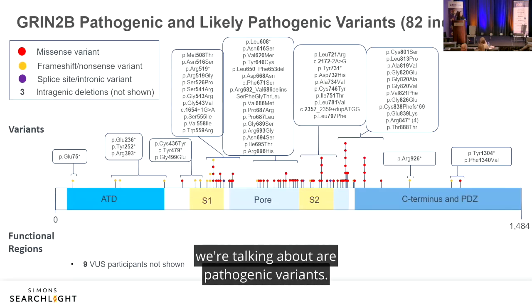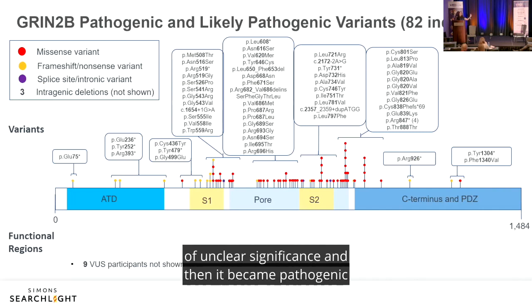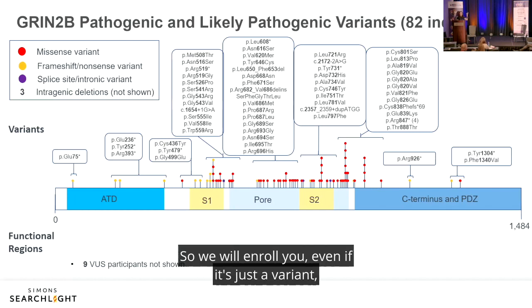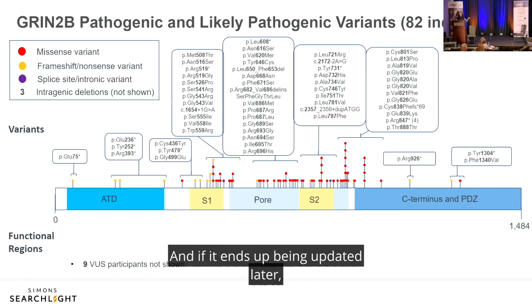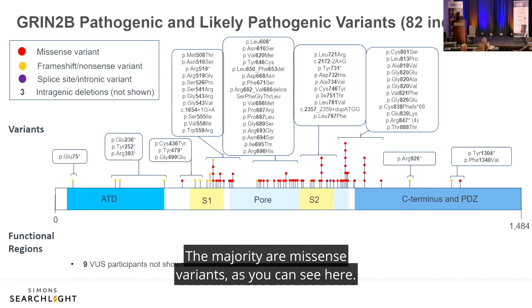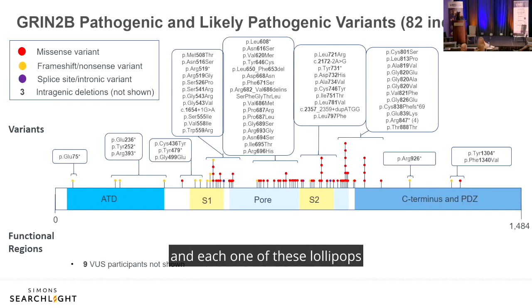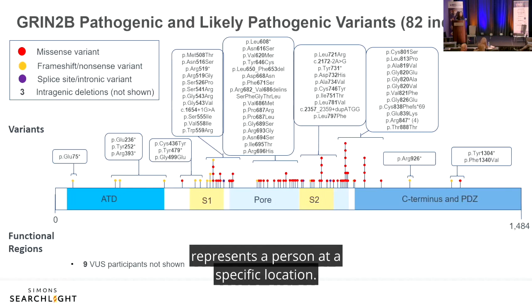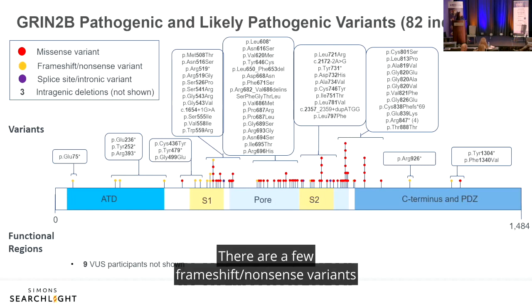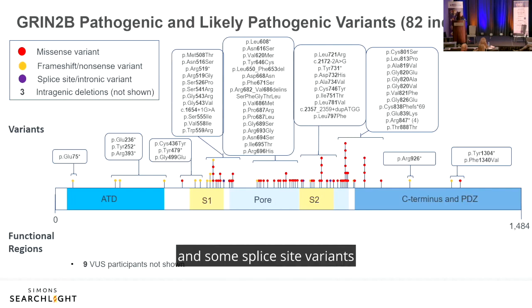Simons Searchlight collects all types of pathogenic variants. They will enroll you even with a variant of uncertain significance and continue to follow you — if the classification is updated later to pathogenic or likely pathogenic, that gets incorporated. The majority of GRIN2B variants enrolled are missense. A schematic shows each enrolled participant as a lollipop at their specific gene location — the red ones are missense variants. There are also a few frameshift, nonsense, splice site, and deletion variants not shown on the schematic.